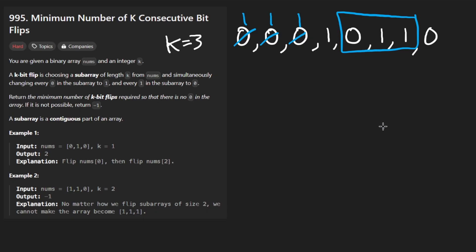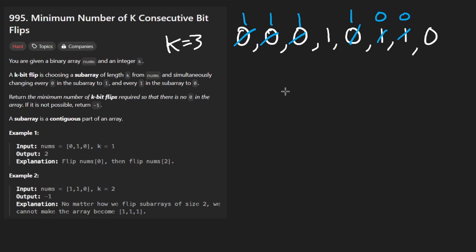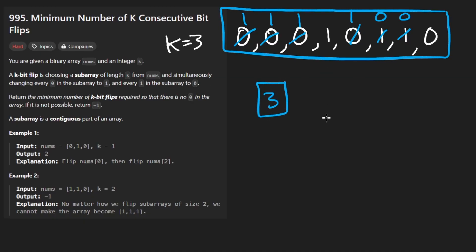So let's flip here — this becomes a one, and these become zeros. It turns out that worked out for us: these two are zeros, this is a zero, we pick this window and flip it. That took us three flips total. What we return in this case is three — the minimum number of flips needed to make the array all ones.